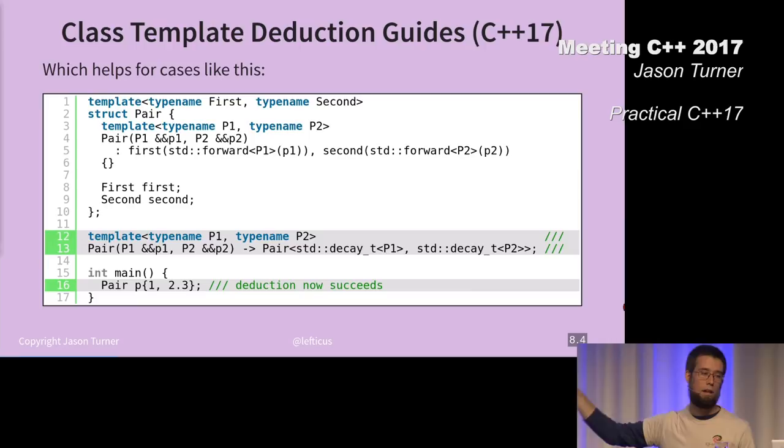Has it been proven, I think, that we have yet another Turing complete feature of the language with deduction guides? I think that has been proven now.